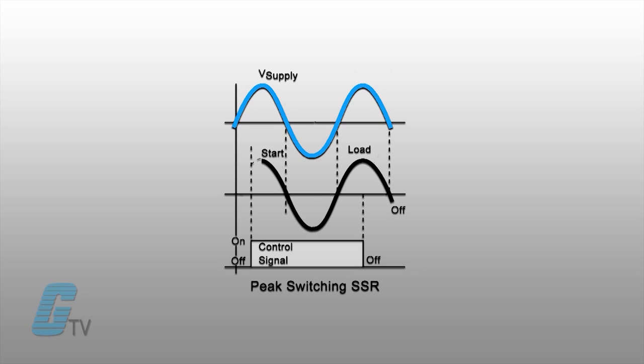Peak switching relays turn on the load when the control voltage is present and the voltage of the load is at its peak. The relay turns off when the control voltage is removed and the load current is close to zero.